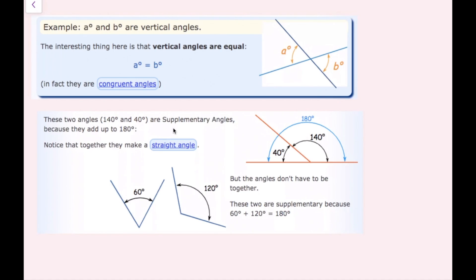Another review topic is supplementary angles. Supplementary angles are angles that add up to 180 degrees. Typically we'll see them on a straight angle — so 140 and 40 degrees are supplementary because they add up to 180. Technically, supplementary angles don't need to be on a straight angle, so a 60-degree angle and 120-degree angle are supplementary, but for our purposes we'll typically see supplementary angles on a straight angle.